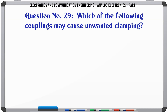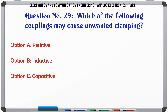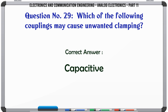Which of the following couplings may cause unwanted clamping? A. Resistive. B. Inductive. C. Capacitive. D. Both A or B. The correct answer is: Capacitive.